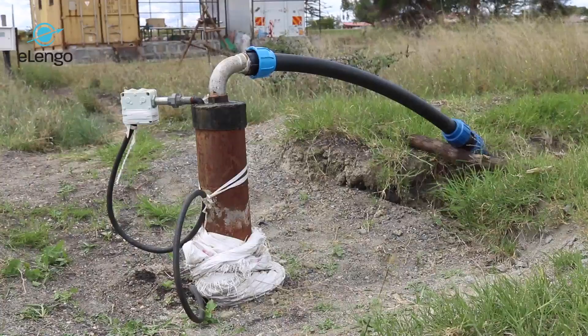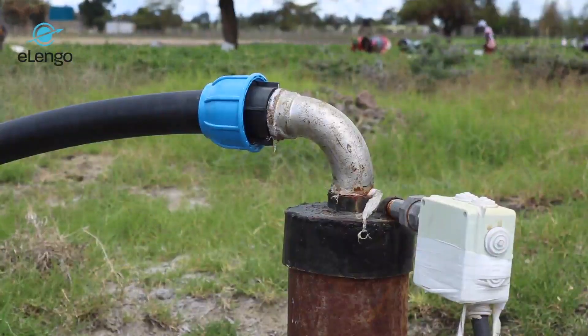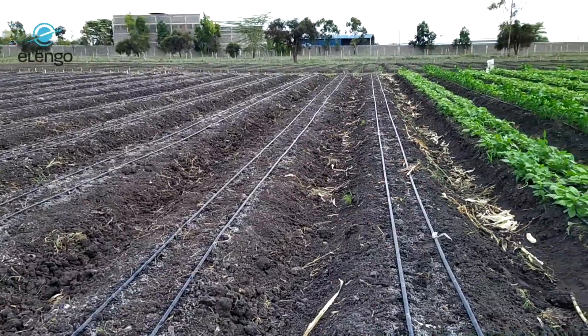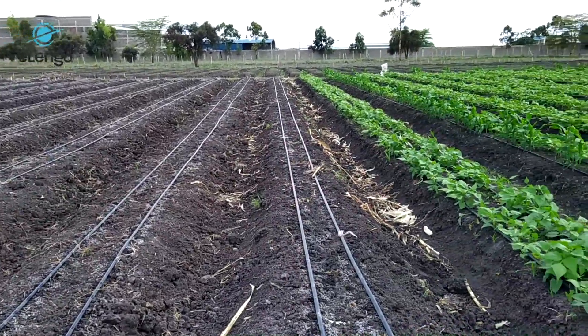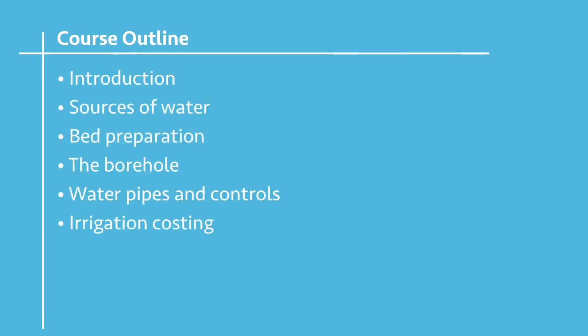We are going to look at irrigation via a borehole as a source of water. Apart from the water quality, we are going to look at the land demarcation — how you demarcate your land, how you set up the different sections, and how you do the beds. Because it will be drip irrigation, you have to know how to prepare the beds. Your land has to be arranged into blocks so that those blocks can form the irrigation sections.